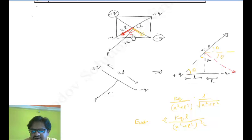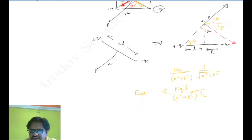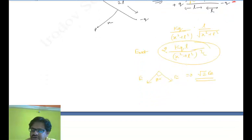This total angle will be 90 degrees. To find the net electric field, if this is electric field E and the other one is also E, then E and E at 90 degrees will become √2 times E.